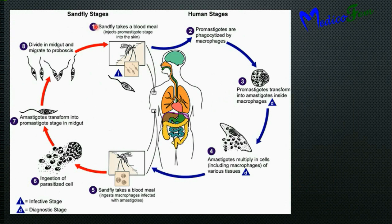This is the complete life cycle of leishmaniasis. The sandfly takes a blood meal and deposits the promastigoid into macrophages. They divide by binary fission, forming multiple amastigoids. Amastigoids are released from the macrophage and re-enter the sandfly. In the midgut, amastigoids transform to promastigoids, divide by binary fission, and multiple promastigoids are deposited into the proboscis. The infective stage (I) is the promastigoid stage, and the diagnostic stage (D) is the amastigoid of leishmaniasis.